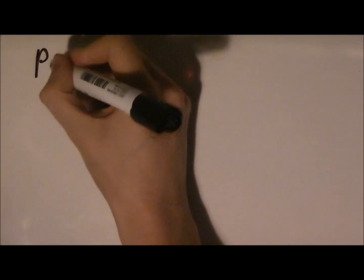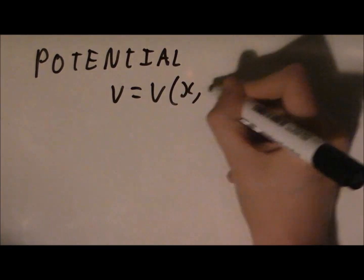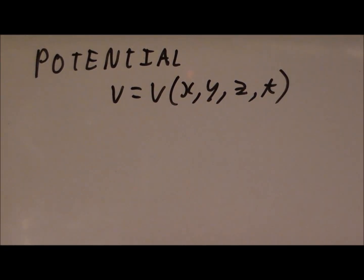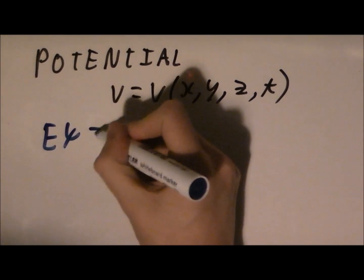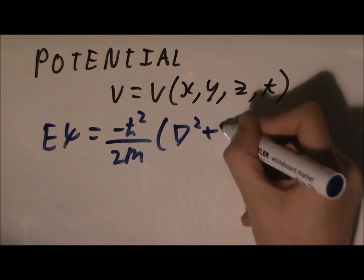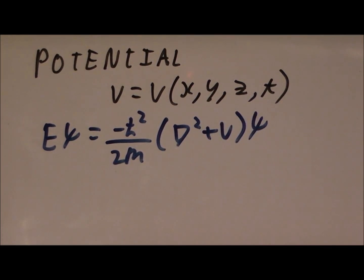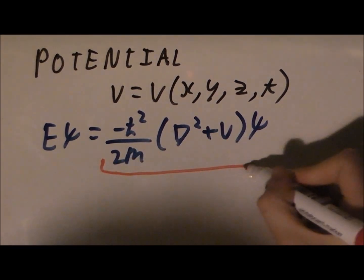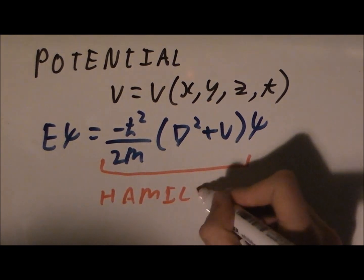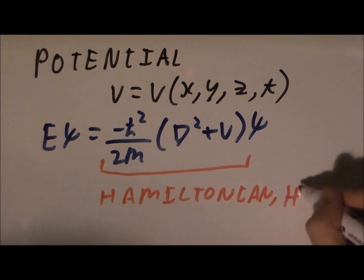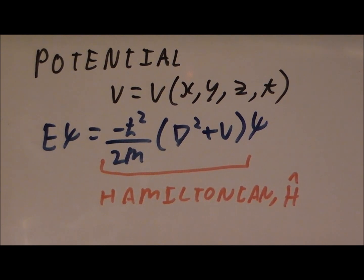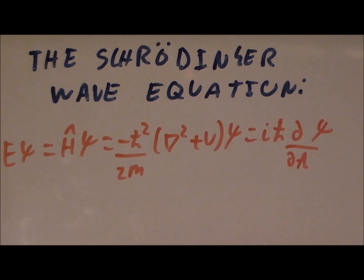Finally, we need to add any terms due to any potentials the particle might be in. We call the potential V, and V can depend on any combination of x, y, z, and t. But, this potential varies from problem to problem, so we just add the general form into the equation. This new operator is called the Hamiltonian, H-hat, and is equal to T plus V. If there's no potential term, V equals zero, and we recover the free space result. Now, we can write the full Schrödinger wave equation.